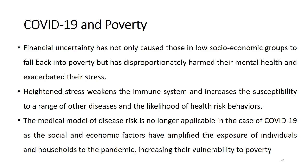What we want to show at the end of this first part of the module is that the medical model of disease risk — specifically in the case of COVID-19 — is no longer relevant alone, because social and economic factors have amplified the exposure of individuals and households to the pandemic, increasing their vulnerability to poverty. We need to factor in systemic risk in terms of social and economic impact on individuals. Of course, the most vulnerable ones are most likely to be impacted.